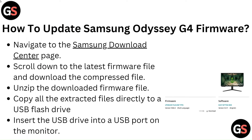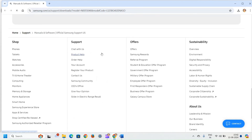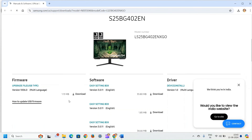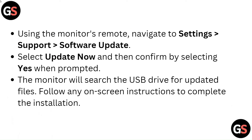How to update Samsung Odyssey G4 firmware: Navigate to the Samsung Download Center page. Scroll down to the latest firmware file and download the compressed file. Unzip the downloaded firmware file. Copy all the extracted files directly to a USB flash drive. Insert the USB drive into a USB port on the monitor.